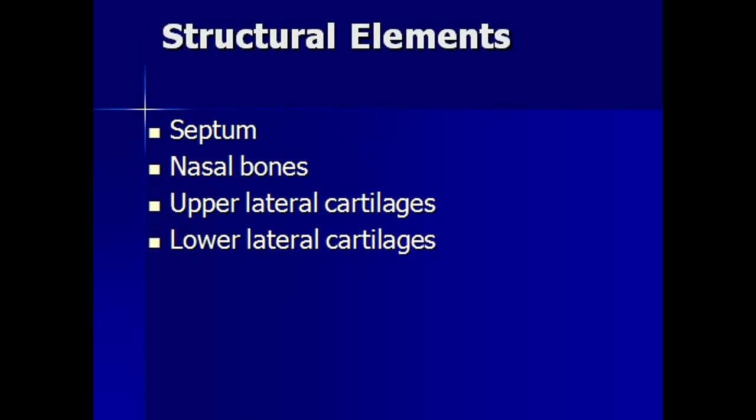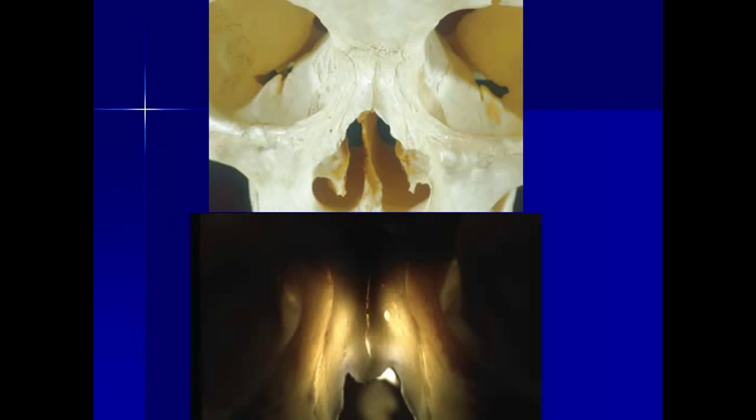The structural elements of the nose include the nasal septum, which is the partition or wall between the two sides of the nasal cavities, the nasal bones, the upper lateral cartilages, and the lower lateral cartilages.